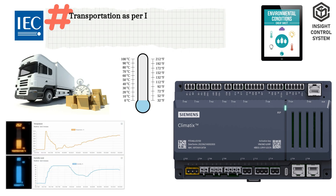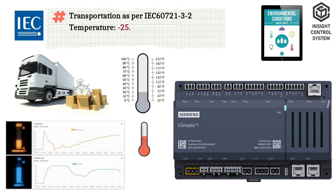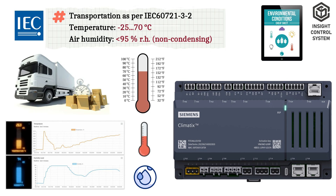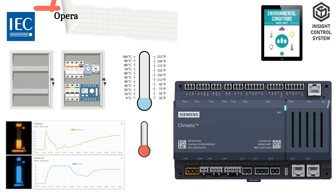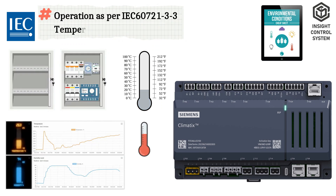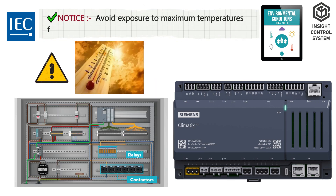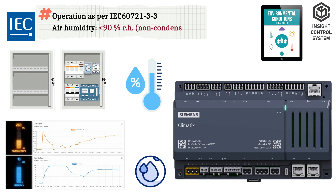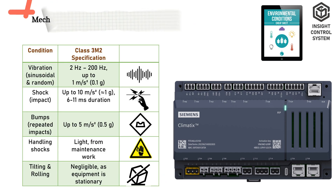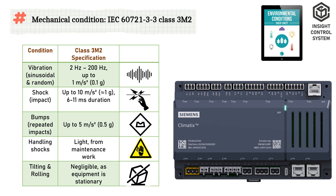In transportation: temperature minus 25 to 70 degrees Celsius, air humidity less than 95% RH non-condensing, mechanical condition class 2M2. In operation: temperature minus 20 to 60 degrees Celsius — note: avoid exposure to maximum temperatures for prolonged periods. Air humidity less than 90% RH non-condensing, mechanical condition class 3M2.